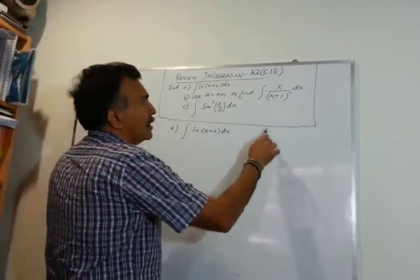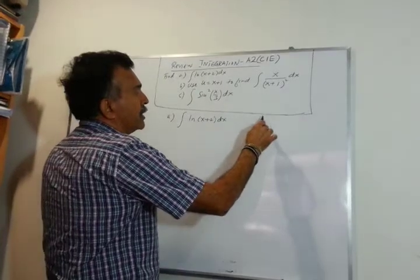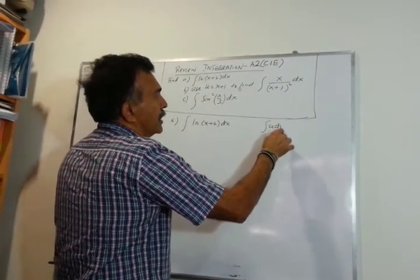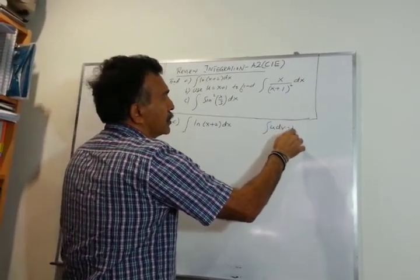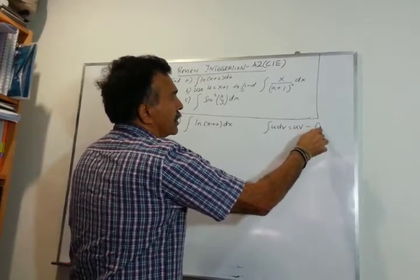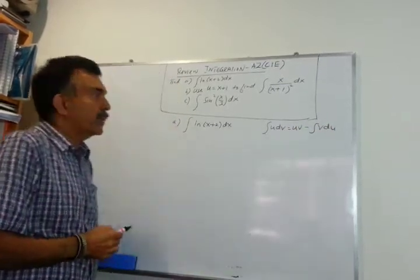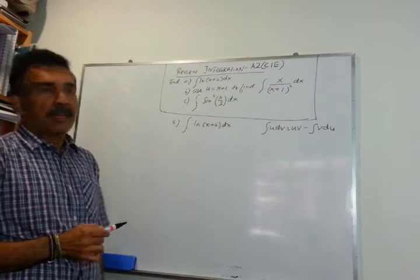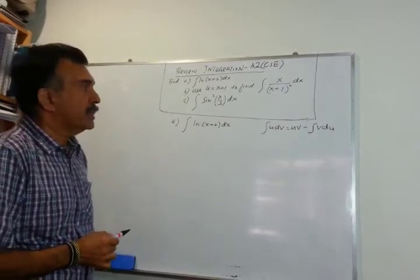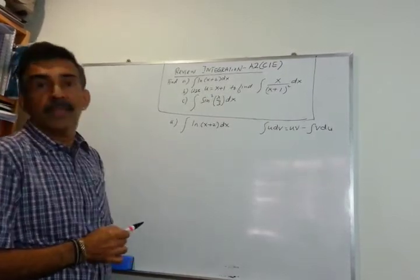Let me write down the by parts formula: the integral of u dv equals uv minus the integral of v du. This is the famous by parts formula — u dv equals uv minus v du.